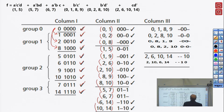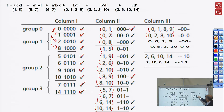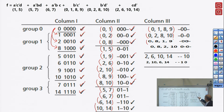Moving to the next column, we try to combine the newly formed pairs. 0,1 and 1,5 cannot combine; 0,1 and 1,9 cannot combine directly, but 0,1 and 8,9 can combine to give -00-. 0,2 cannot combine with 1,5 or 1,9, but can combine with 8,10. And 0,8 can combine with both 1,9 and 2,10.